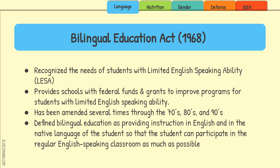This act has been modified from the 70s, 80s, and 90s onward. It defined bilingual education as providing instruction in both English and the student's native language — whether Spanish, French, or another language — so the student can participate in the regular English-speaking classroom as much as possible. Just like special education, the overall goal is to keep the student in the regular education classroom with their peers as much as possible.